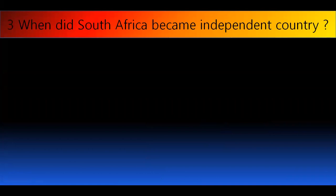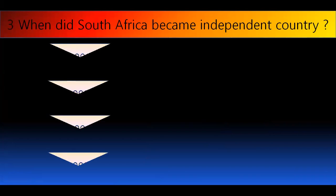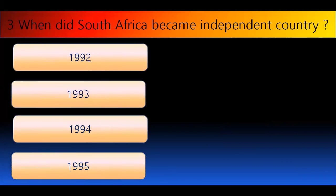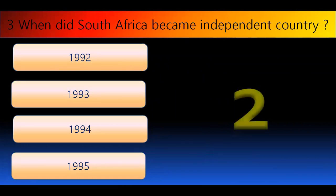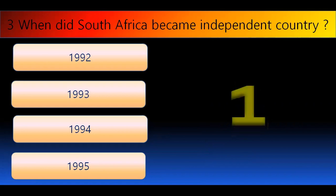Question number three: When did South Africa become an independent country? Options are 1992, 1993, 1994, or 1995. The right answer is 1994.